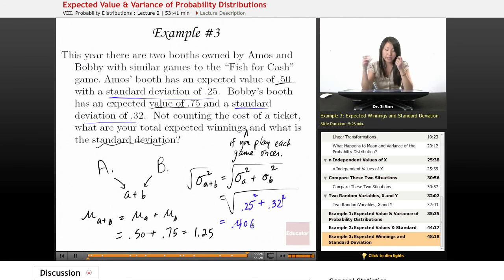So that is our new standard deviation. It is larger than either of them alone. And that makes sense because we're increasing variance because we're adding things together.